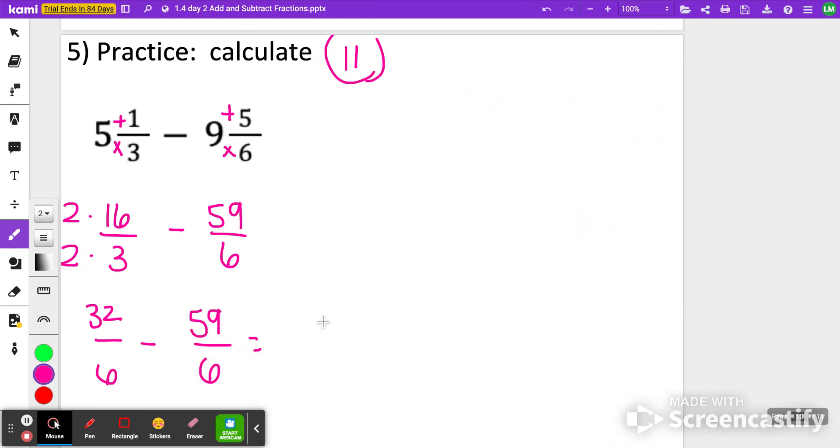So that should be 32 sixths minus 59 sixths. Being very careful of what I'm subtracting here, I am going to get a negative. I'm going to end up having negative 27 over 6. 27 and 6 can both be reduced. So let's simplify them by 3. And I get negative 9 over 2.